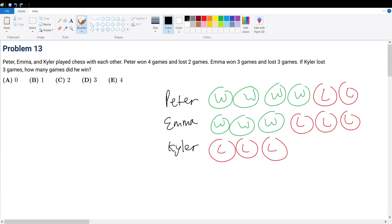Problem 13. Peter, Emma, and Kyler played chess with each other. Peter won 4 games and lost 2 games. Emma won 3 games and lost 3 games. If Kyler lost 3 games, how many games did he win?